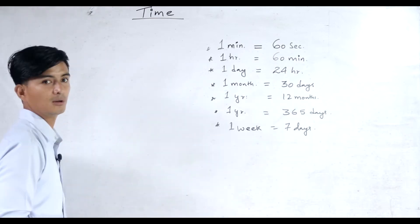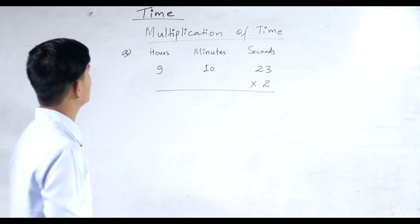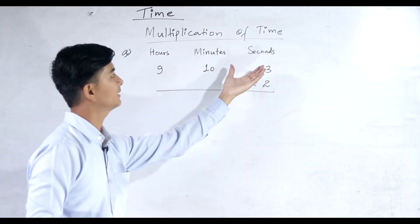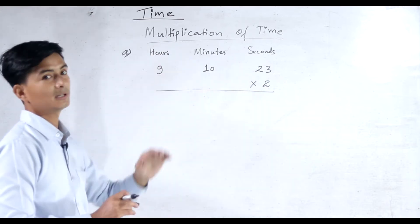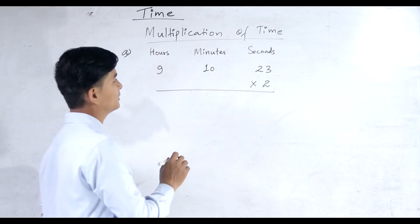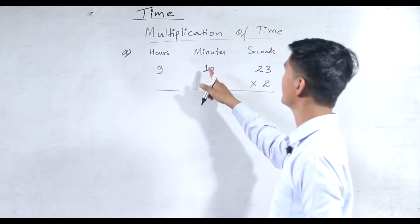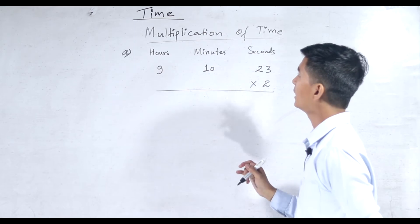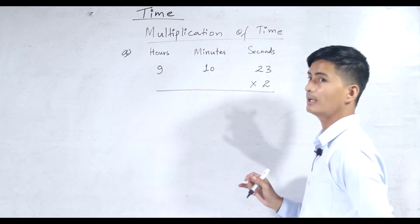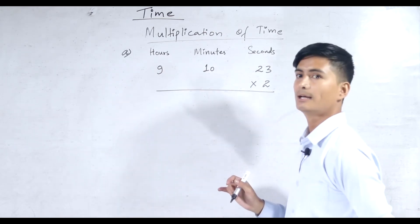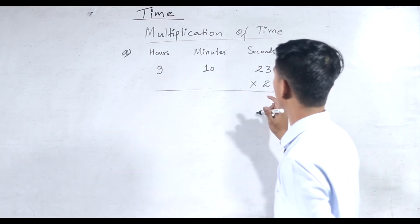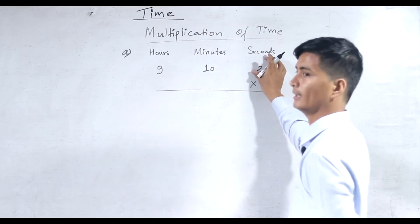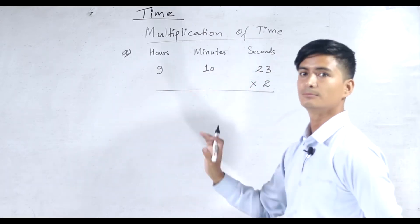Let's do some problems. The first problem is multiplication of time in hours, minutes, and seconds. We have to multiply 9 hours, 10 minutes, 23 seconds by 2. As I have already told you, one minute has 60 seconds and one hour has 60 minutes. First, we multiply 2 by seconds, then minutes, then hours.